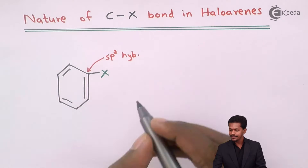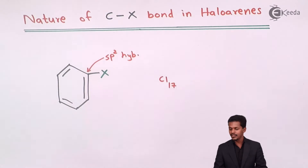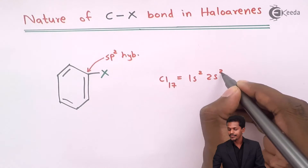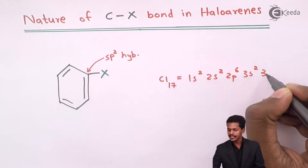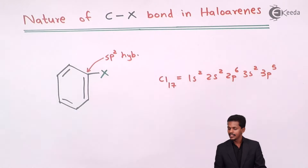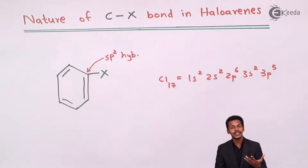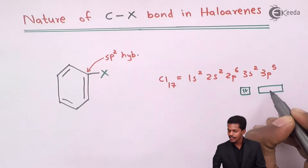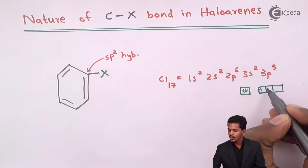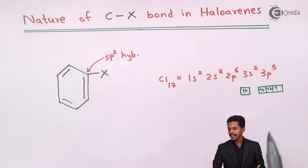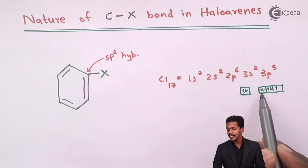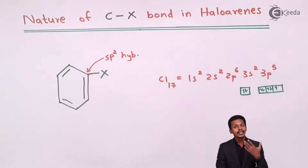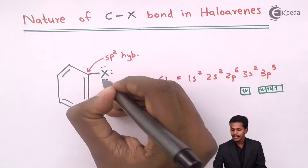For example, if I take chlorine, it has an atomic number of 17, so its electronic configuration is 1s2, 2s2, 2p6, 3s2, 3p5. We can easily find how many lone pairs of electrons the chlorine atom has. The 3p orbital consists of 5 electrons, leaving 1 unpaired electron that bonds with the carbon atom. Therefore the halogen atom consists of 3 lone pairs of electrons.